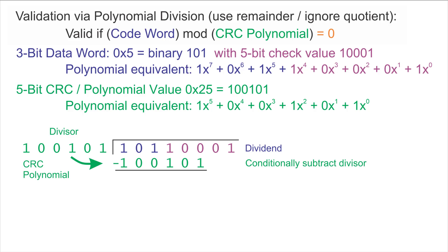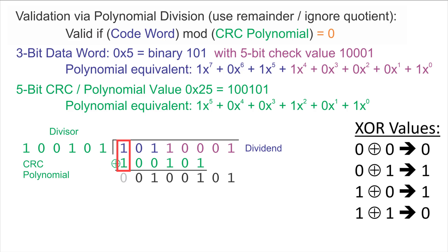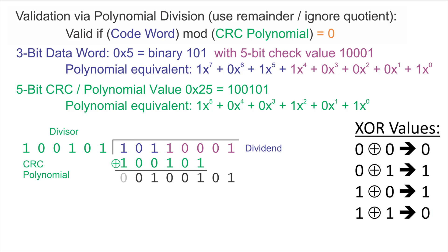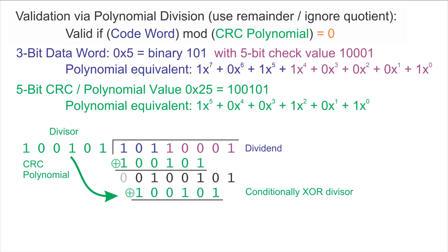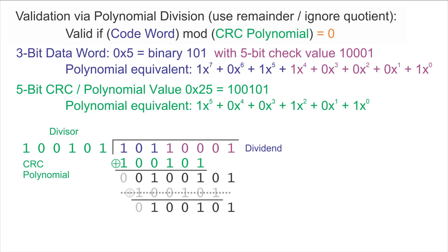The first step is a trial subtraction, but since these are binary coefficients, instead of subtraction we use an XOR. In this case, the subtraction will work because the top two bits of the active dividend and the divisor are both one, giving us a guaranteed zero in the top position and bringing down all the rest using XOR arithmetic. We then do another conditional XOR, but we find that this one doesn't work because the current top bit of the dividend is zero, so no XOR is performed with the divisor. We skip that step and just bring down the bits as they are.